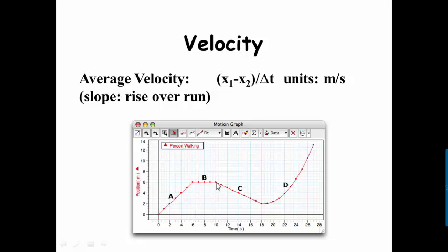Okay, then they go in the opposite direction for C. They go from six meters back to two meters, and it took them from ten seconds to eighteen seconds. So they walk back a little bit, a little bit more slowly, and then all of a sudden D looks very interesting, right? It's not linear anymore.